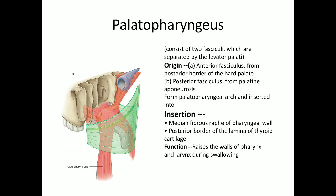The palatopharyngeus, as the name suggests, runs from the palate to the pharynx. It has two fasciculi separated by the levator veli palatini muscle. The anterior fasciculus originates from the posterior border of the hard palate, and the posterior fasciculus originates from the palatine aponeurosis. It inserts on the median fibrous raphe of the pharynx and on the posterior border of the lamina of the thyroid cartilage. Its function is to raise the wall of the pharynx and larynx during swallowing.